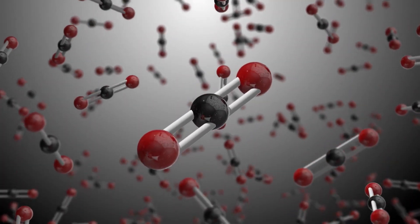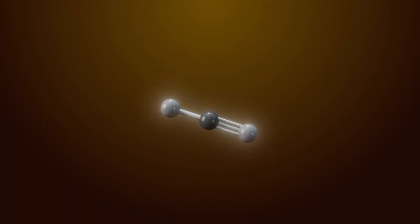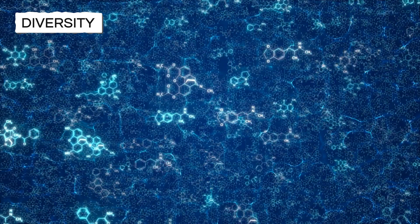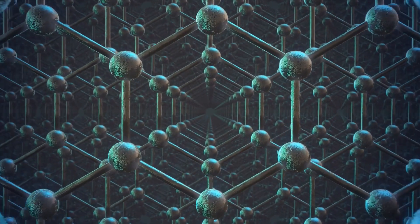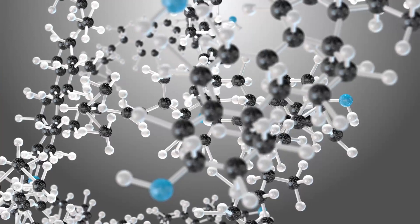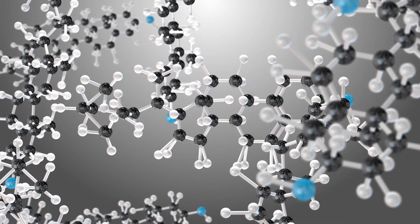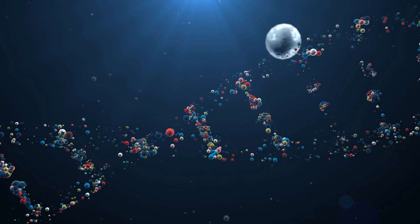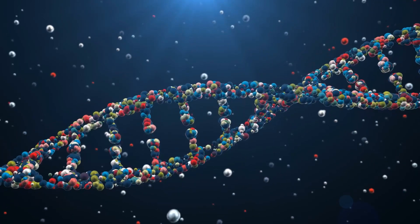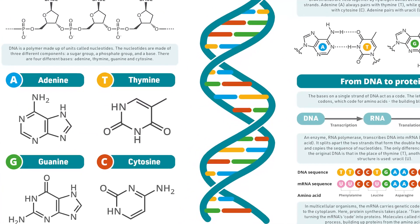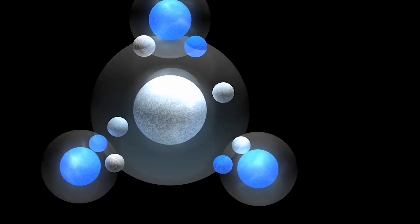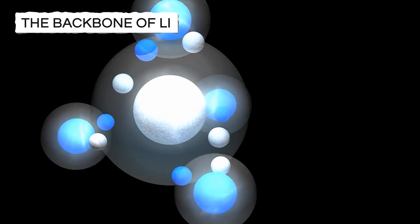Carbon can also form bonds with varying strength — single, double, or triple — with other elements. This diversity results in millions of possible configurations, making carbon uniquely capable of participating in a vast array of chemical reactions. Carbon's ability to form long, stable polymer chains is especially crucial. These chains can carry extensive information, as exemplified by DNA. DNA encapsulates all the information that defines living organisms, including ourselves. The four nucleotides comprising DNA's building blocks are intricate, and carbon's capacity to handle complexity makes it the backbone of life.